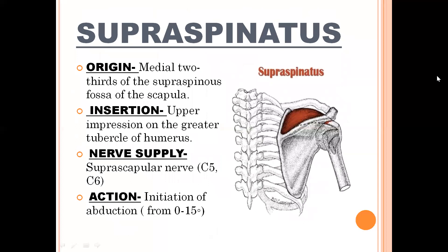I will start with supraspinatus. Origin: medial two-thirds of the supraspinous fossa of the scapula. Insertion: upper impression on the greater tubercle of humerus. Nerve supply: suprascapular nerve having root value C5 to C6. The suprascapular nerve is the branch of the upper trunk of the brachial plexus. Action: initiation of abduction from 0 to 15 degrees. The supraspinatus muscle originates from the scapula and gets inserted onto the greater tubercle of humerus.